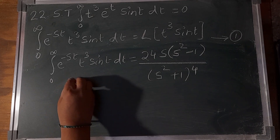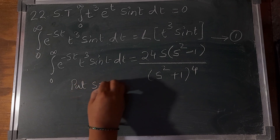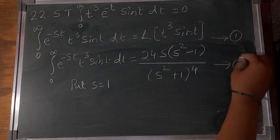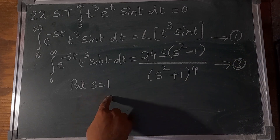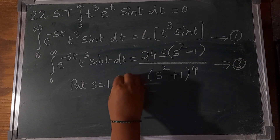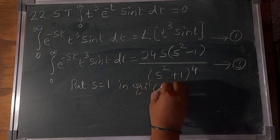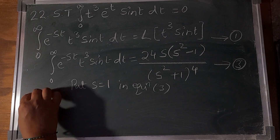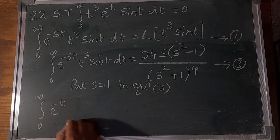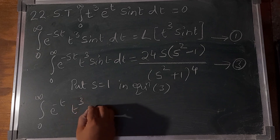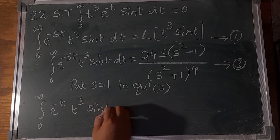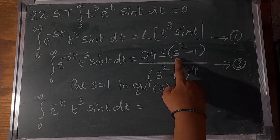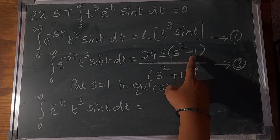Put s = 1 in equation number 3. The integral of 0 to infinity e^(-t) t³ sin(t) dt equals [24(1)(1² - 1)] / (1² + 1)⁴. Since s = 1: 1² = 1, 1 - 1 = 0.